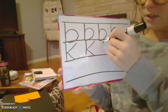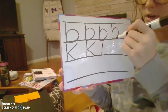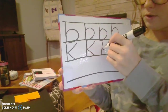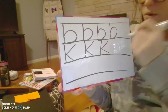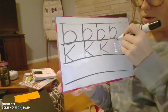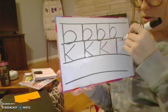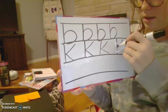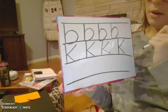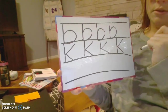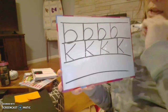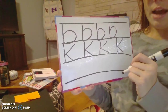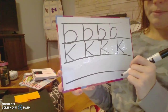Two more times, the letter K — straight down, diagonal, diagonal. One more time — straight down, connect to that straight line diagonally, and come back out. So we have the letter B and the letter K, and now we're going to practice the letter T.